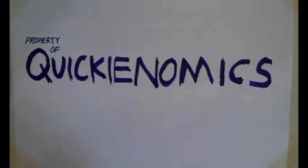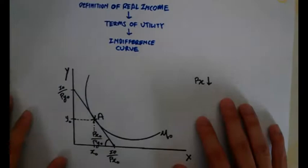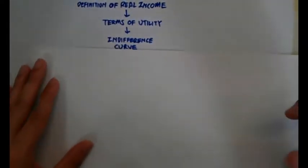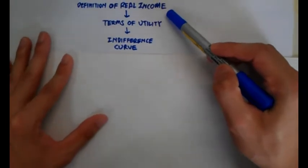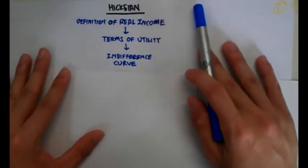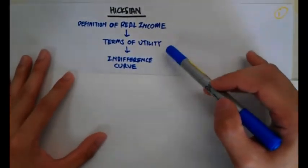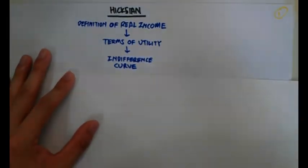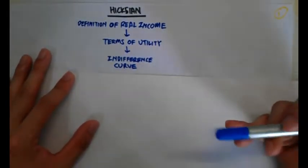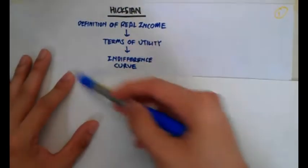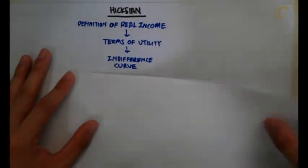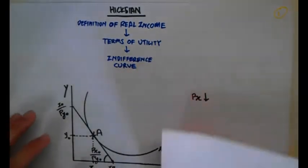Let's move on to the Hicksian definition of real income. Hicksian's definition of real income is in terms of utility. When we talk about utility, we think about the indifference curve. With this chain of thought, it will be easier for us to understand how to draw the Hicksian substitution effect and income effect.